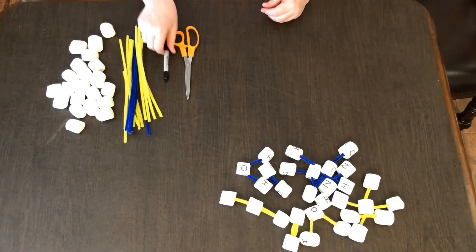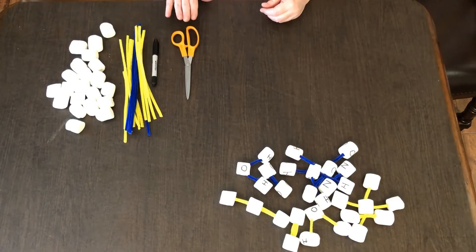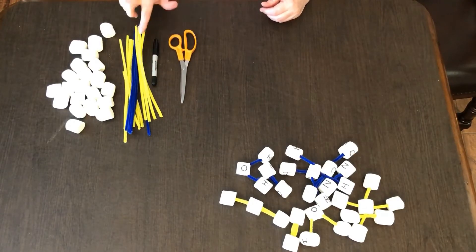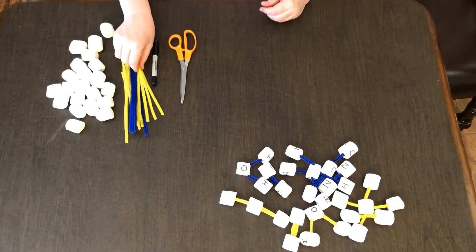You'll need pipe cleaners, a Sharpie marker, and some old scissors. Since you're going to be cutting the pipe cleaners with the scissors, you don't want to use your good scissors.